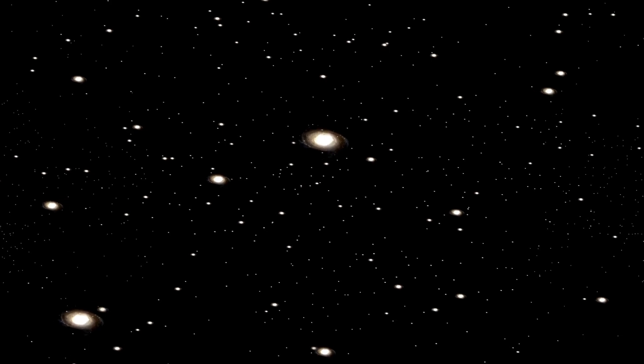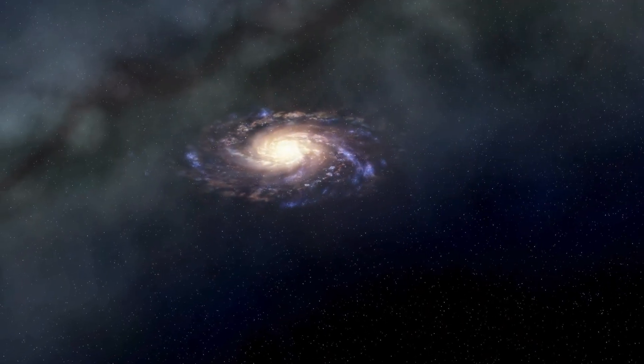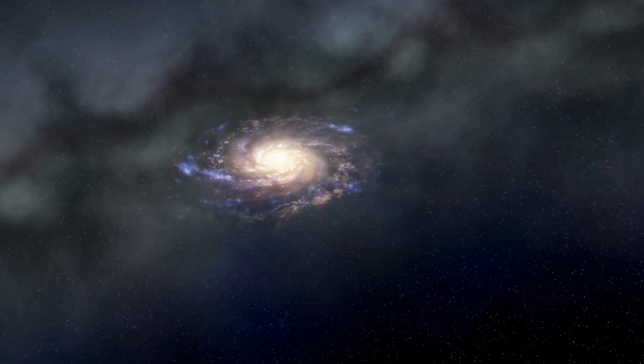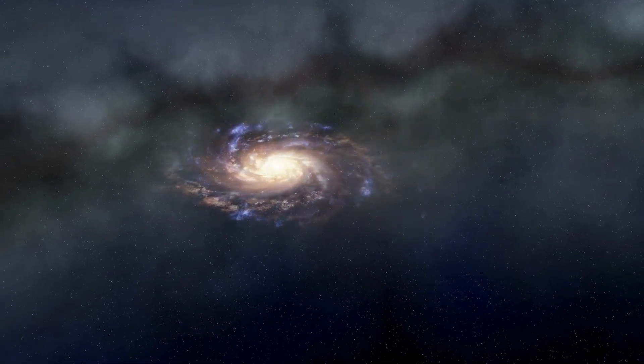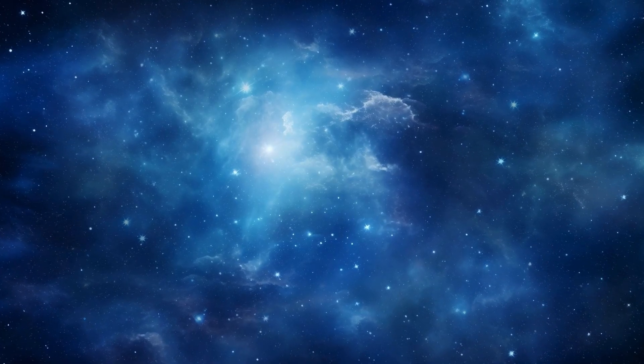How did this unimaginably vast universe come into being? For centuries, scientists believed the universe to be eternal and unchanging, governed by the immutable laws of physics. However, in 1927, a Belgian priest and scientist named Georges Lemaitre proposed a different idea.